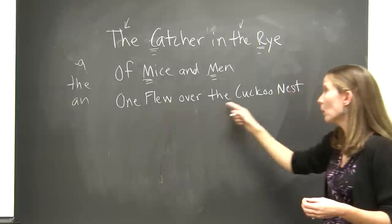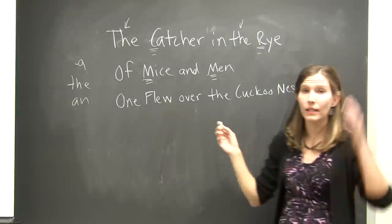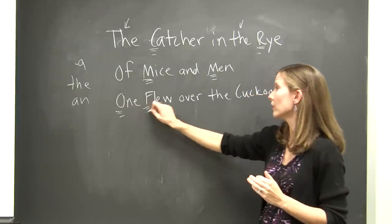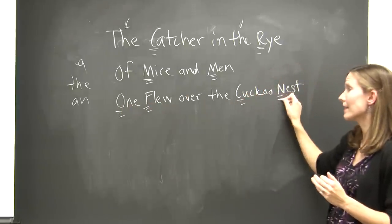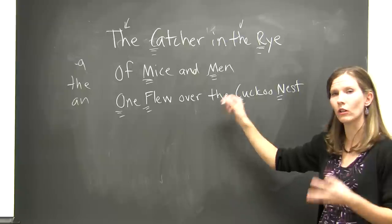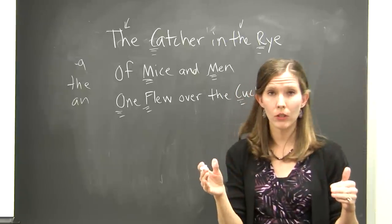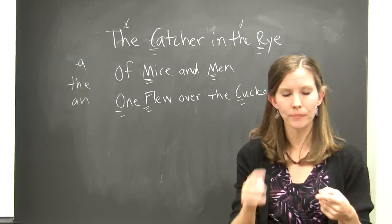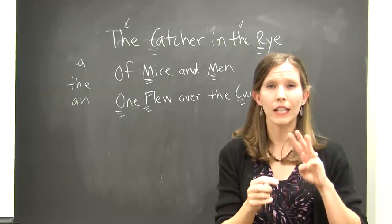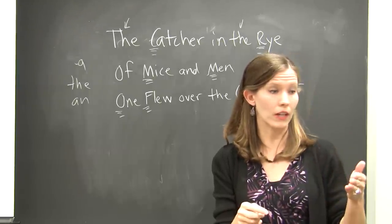The final example is One Flew Over the Cuckoo's Nest. You capitalize the important words: One, Flew, Cuckoo's, and Nest. Over is a preposition and the is an article, so they're lowercase. To summarize: capitalize all important words of the title, except for prepositions, articles, and conjunctions — unless those kinds of words are the very first word of the title.